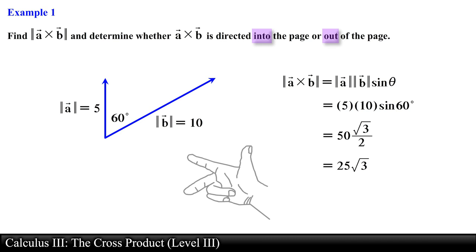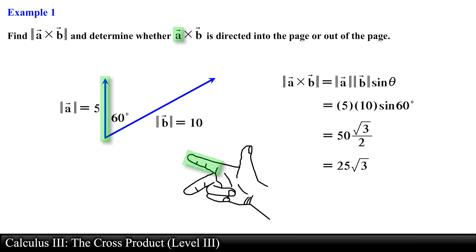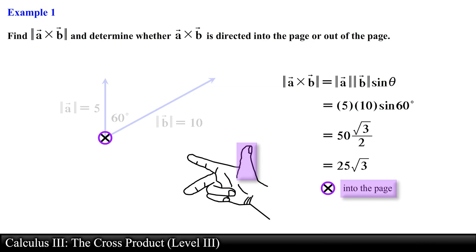To determine the direction of the cross product we use the right-hand rule. This vector is perpendicular to both vector a and vector b, as well as the common plane containing them. We place our fingers in the direction of vector a so that our palm faces vector b and curl them towards vector b. Our thumb points into the page, so we denote this vector with an x. If the vector pointed out of the page, we would denote it with a dot.